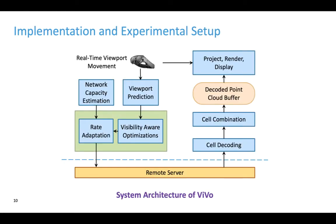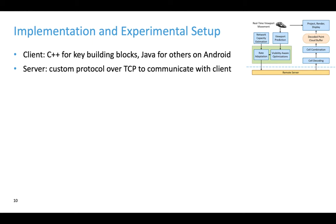To demonstrate the effectiveness of the three optimizations, we proposed Vivo, a visibility-aware volumetric video streaming system. This figure shows the system architecture of Vivo. Vivo predicts future viewport on mobile devices using lightweight motion-learning models such as linear regression. After requesting the cells and getting them from the server, we use multiple decoders to make them available for display as early as possible. To smooth playback when the viewer changes viewport, we decouple decoding and rendering by buffering decoded point clouds for a short period of time. On the client side, we used Android NDK for key building blocks such as viewport prediction, visibility-aware optimizations, and point cloud decoding, and Android SDK for others.